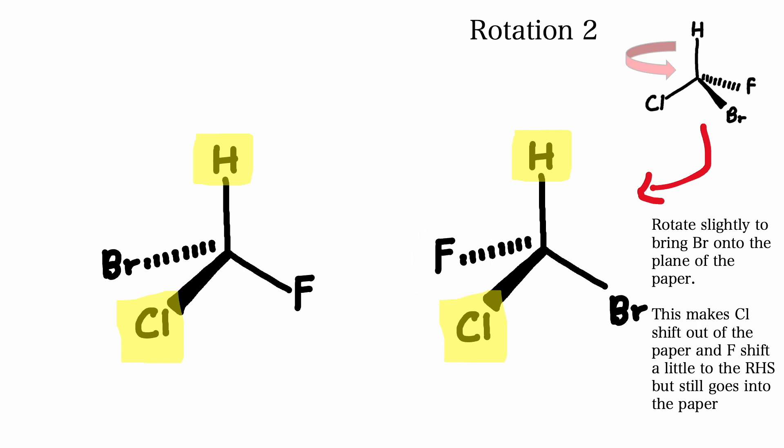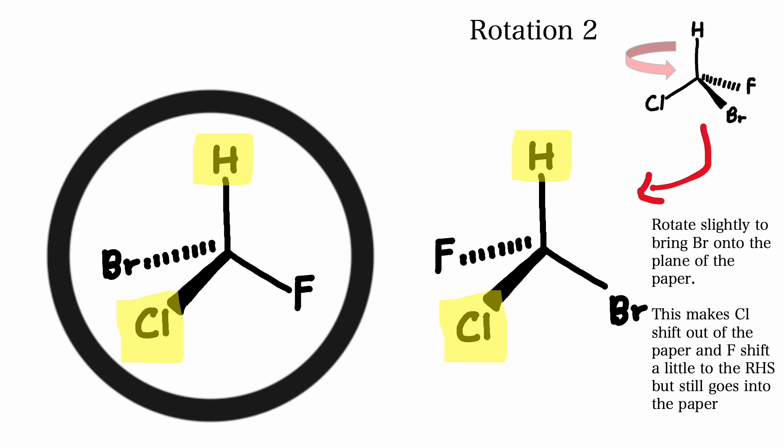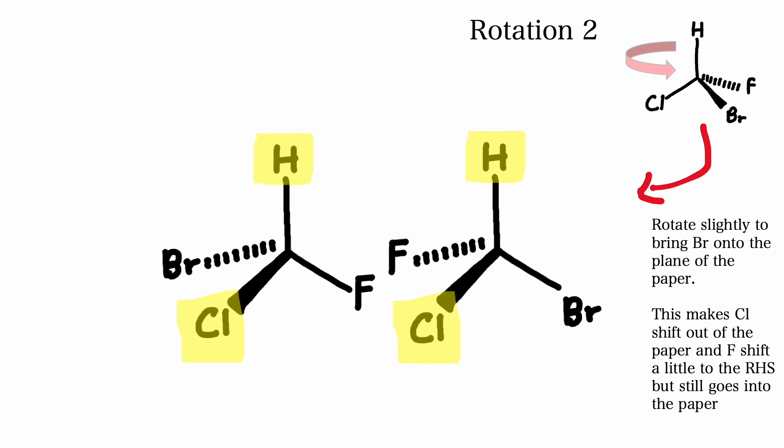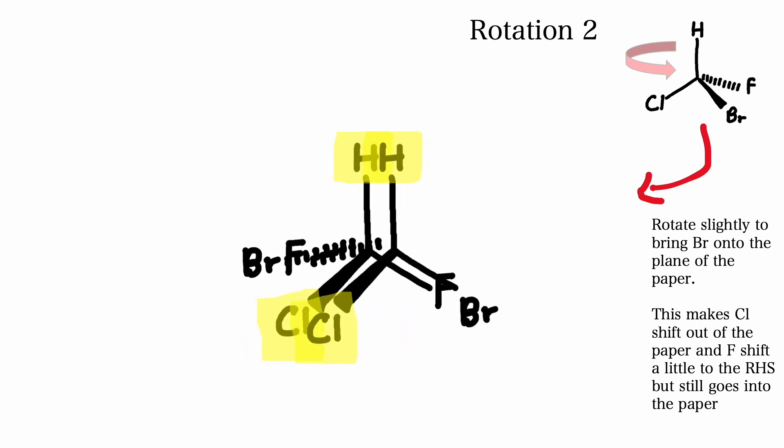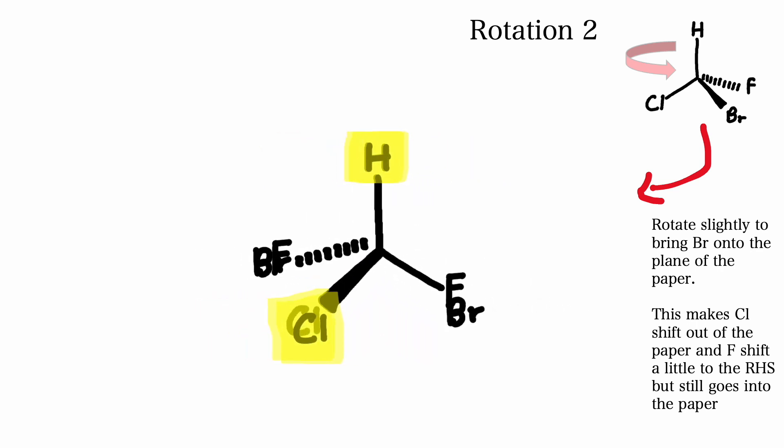If we compare it to the original molecule that we took the mirror image of, we see that hydrogen and chlorine are superimposable. However, bromine and fluorine are not.